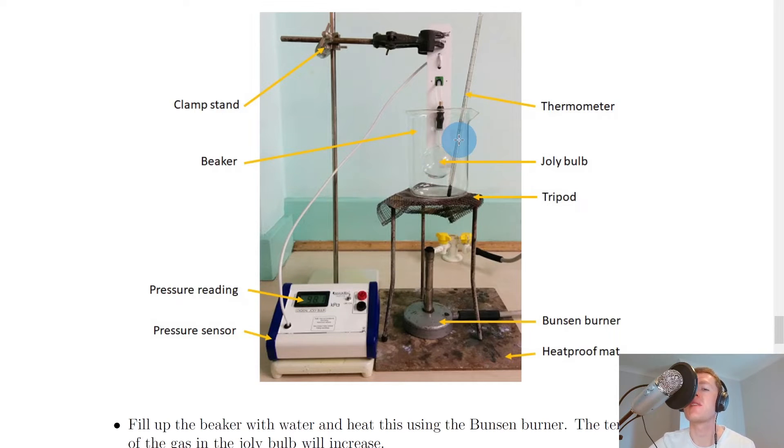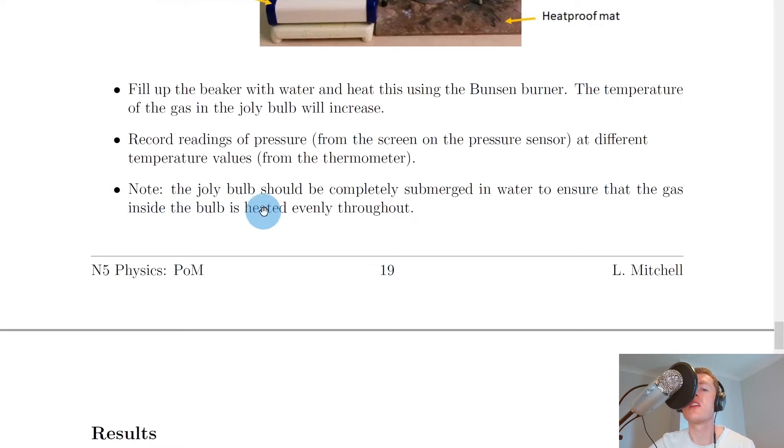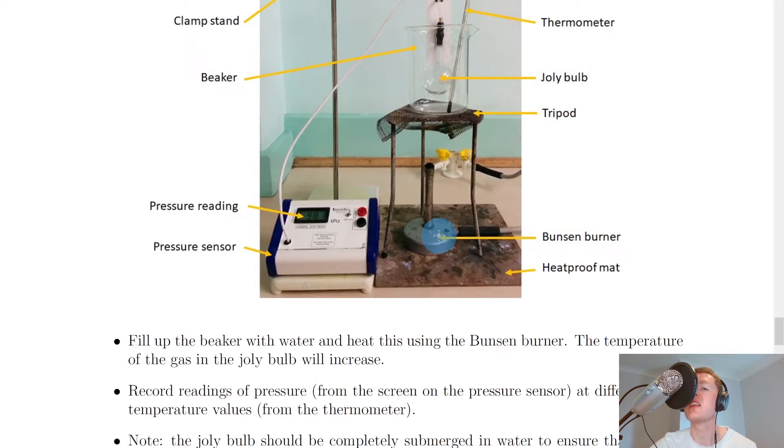So in practice it would be very difficult to measure the temperature of the gas inside the jolly bulb directly so we can measure this temperature indirectly by getting the temperature of the surrounding water. It then says to note that the jolly bulb should be completely submerged in water to ensure that the gas inside the bulb is heated evenly throughout. And this is the answer to a common question that you could be asked in an exam which is why does the jolly bulb need to be completely submerged in the water.